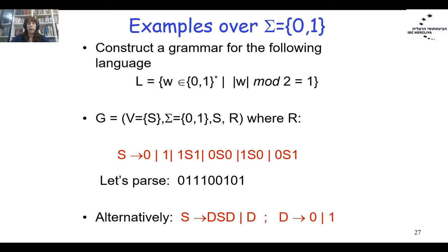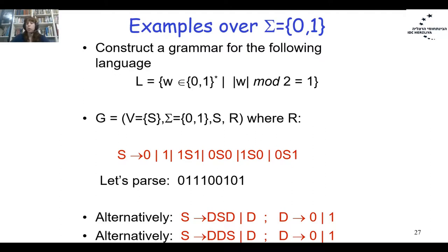An alternative grammar for odd-length words uses an additional variable D (digit): S → DSD | D, where D → 0 | 1. Two digits wrap the recursion; a single digit ends. Another alternative: S → DDS | D, with D → 0 | 1 — two digits each step, one digit to finish, giving odd length.